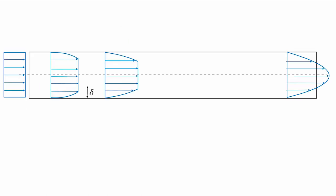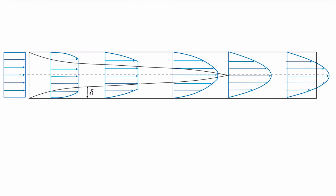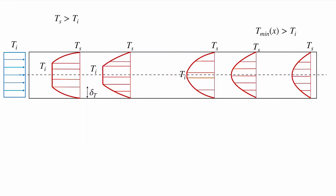We've already seen the developing flow profiles where flow comes from a plug flow and develops into a fully developed flow — in the case of laminar flow, this is a parabola or paraboloid. We also see the same thing in thermal profiles, where the temperature profile adjusts from the constant inlet temperature to a different surface temperature, and we see the development of a thermal boundary layer. With constant surface temperature or constant heat flux, we achieve a different fully developed thermal profile.